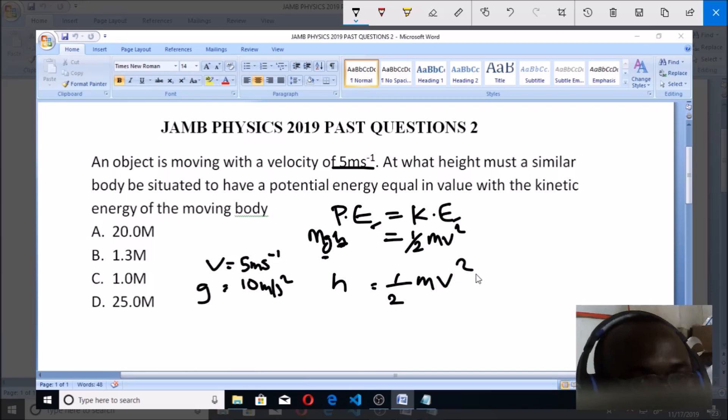Just get that the potential energy has to equal the kinetic energy. PE = KE. Formula for potential energy is mgh, formula for kinetic energy is ½mv². What are you looking for? h, because you're asked at what height. Make it the subject: h = ½mv² over mg. To solve it now is very simple, you have ½...